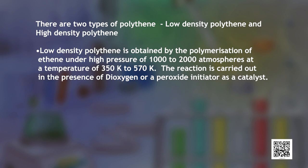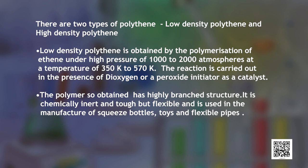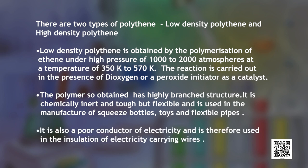Low density polythene is obtained by the polymerization of ethene under high pressure of 1000 to 2000 atmospheres at a temperature of 330 to 570 Kelvin. This reaction is carried out in the presence of dioxygen or a peroxide initiator as a catalyst. The polymer so obtained has a highly branched structure. It is chemically inert and tough but flexible, and therefore it is used in the manufacturing of squeeze bottles, toys and flexible pipes. It is also a poor conductor of electricity and is therefore used in the insulation of electricity carrying wires.